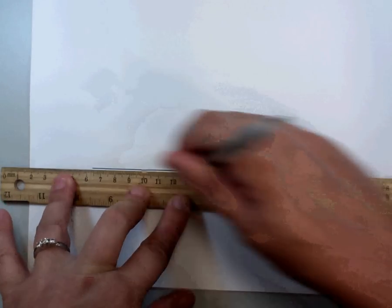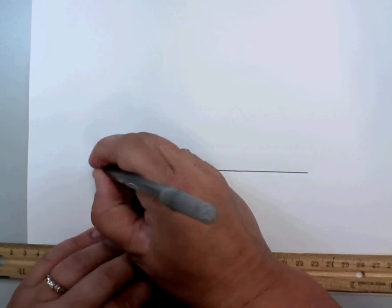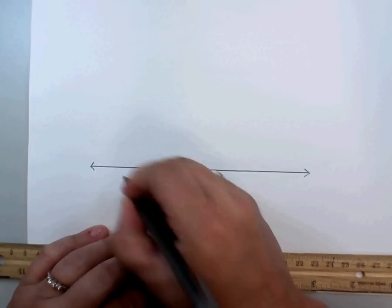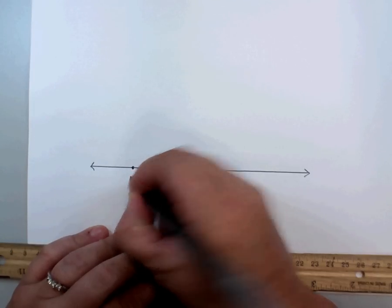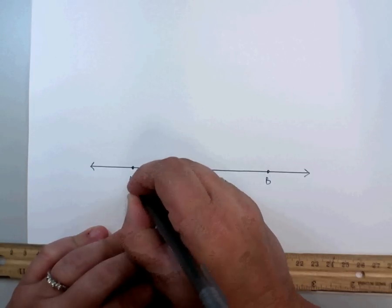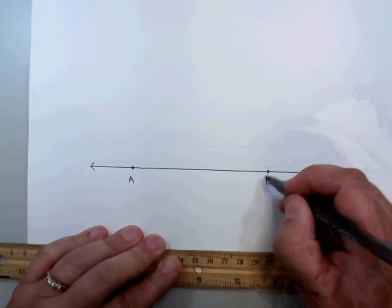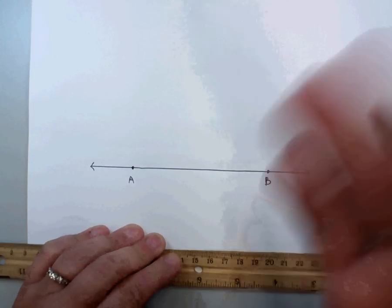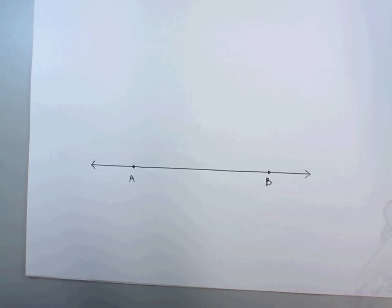We're going to draw a line first, and within that line, we're going to have segment AB. We're going to construct a bisector, a midpoint section that's going to cut these congruently into two.